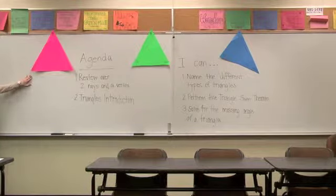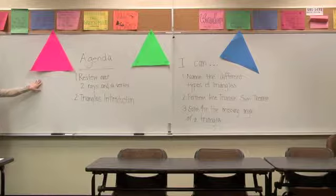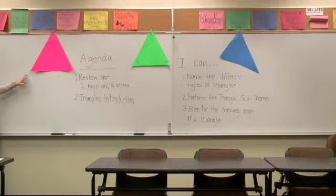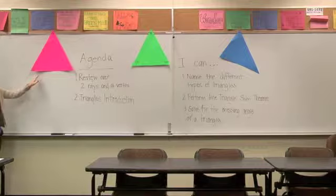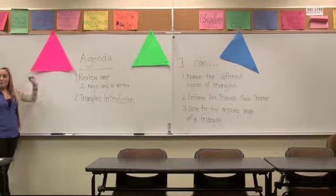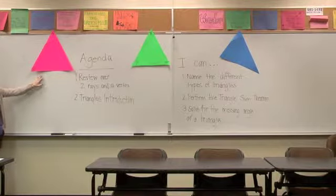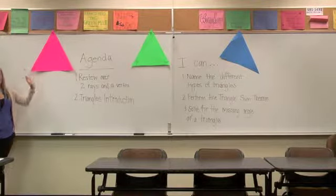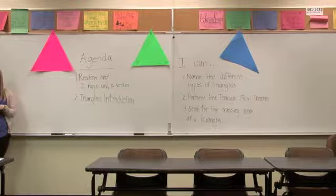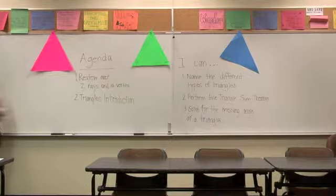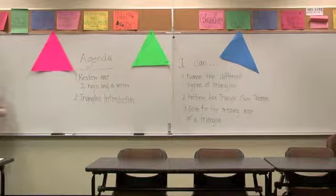Does anyone notice anything different or special about this triangle here? Lainey? All the angles are 60 degrees. Good observation. All the angles here are 60 degrees, which means they're all the same. This is called our equilateral triangle. With equilateral triangles, all the angles and all the sides are the same, which makes them all equal. An easy way to remember that is the word equal is in the word equilateral.